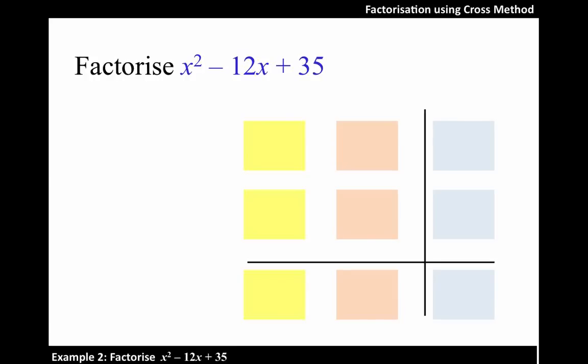Let's use the cross method to factorize the following expression. First, x² can be expressed as a product of x and x as shown in the diagram.